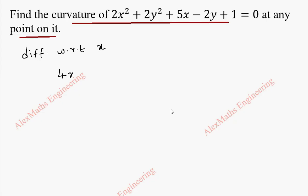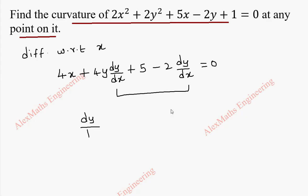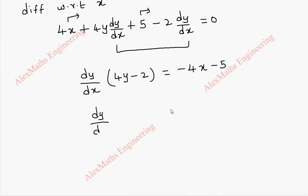So this becomes 4x plus 4y dy/dx plus 5 minus 2 dy/dx equal to 0. From these two, we shall take dy/dx common, so this gives 4y minus 2. And the remaining terms we carry to the other side as minus 4x minus 5. So dy/dx equals minus (4x plus 5) divided by (4y minus 2). We keep dy/dx separately.